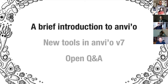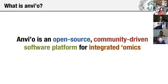Let's start with the introduction to AMVIO. AMVIO is an open source community-driven software platform for integrated omics. It is what it is today, but there was a time during which AMVIO was just an idea.